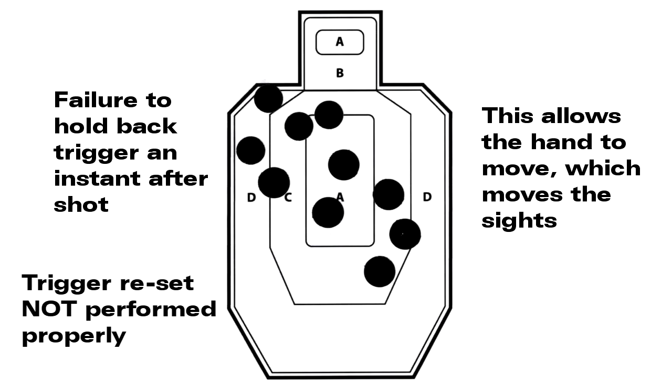Sample target number nine. Probable causes: number one, failure to follow through. Shooter failed to hold the trigger back an instant after the shot and started to relax too soon.